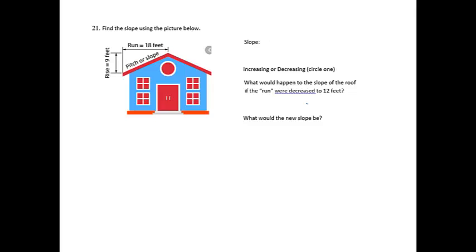Alright, and then problem 21 says to find the slope using the picture below. Once again, we know slope is the y distance divided by the x distance. The y is going up and down, and I noticed they did tell me that my y distance is 9, and then the x distance is 18. So my slope is going to be 9 over 18. Circle 1: is it increasing or decreasing? The slope is going up if I start at the left going to the right.